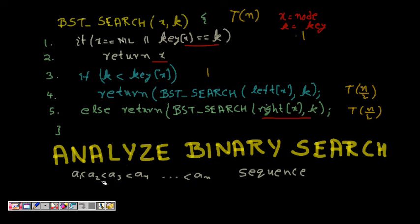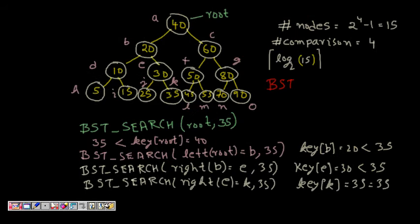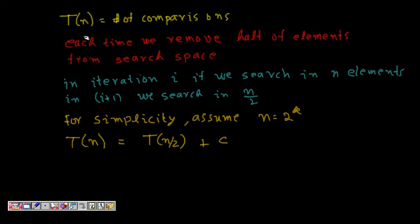This was a review of binary search, but our main aim here is to analyze this algorithm. Most algorithms we analyze use recursion, so we cannot directly analyze them as simple algorithms. Let us define T(n) as the number of comparisons needed to search a key among n elements.